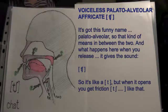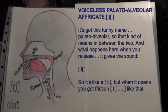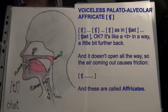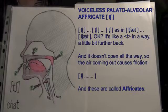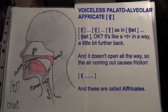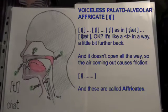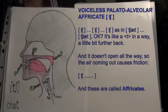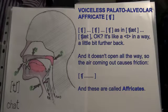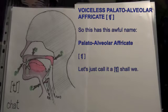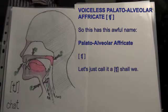So it's like a t, but when it opens, you get friction. Ch, like that. So it's like a t in a way, a little bit further back, and it doesn't open all the way, so the air coming out causes friction. Ch. And these are called affricates. So this has this awful name: palatoalveolar affricate. Ch. Let's just call it a ch, shall we?